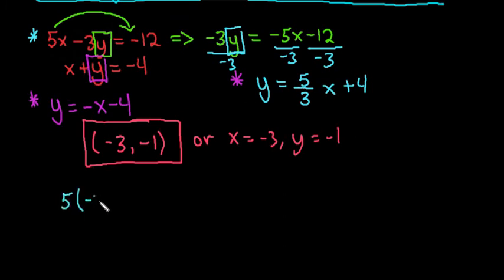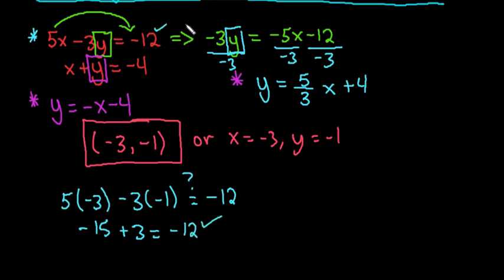So if we plug it into the first one, we would replace x with negative 3 and we would replace y with negative 1. And we want to ask ourselves, does this equal negative 12? So this first part gives me negative 15. This second part gives me positive 3. And if I take negative 15 plus 3, I do get negative 12. So we know that it works in this equation.